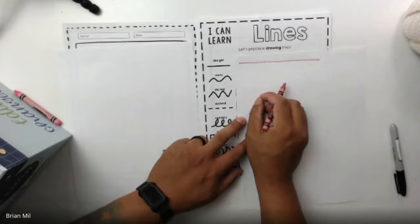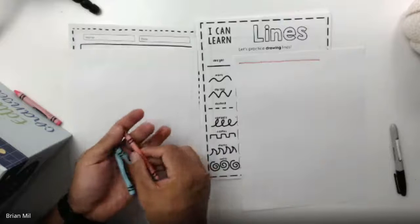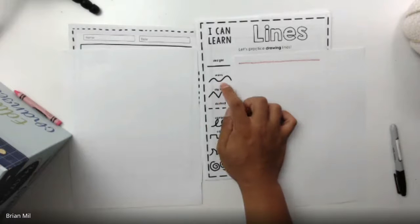And again, if you don't have this worksheet, it's okay, you can always do this on a blank sheet of paper like how I am. All right, the next one, the next one's called wavy, like a wavy line.